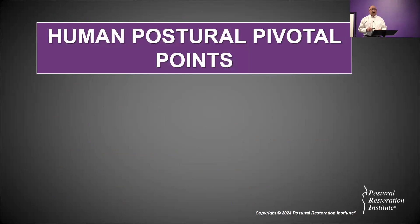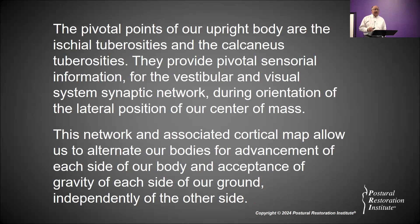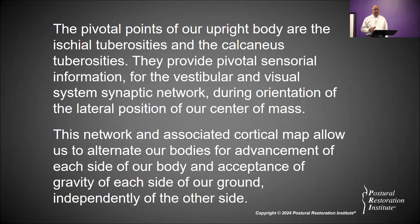The human postural pivotal points of our upright body are the ischial tuberosities and the calcaneal tuberosities. They provide our brain and body the ability to sense pivoting for the vestibular and visual system synaptic network — it's a synaptic discussion during orientation of the lateral position of our center of mass. Wherever the center of mass may be in your body, that sense is going to have a provision of orientation gained from your two ischial seats and your two heels.